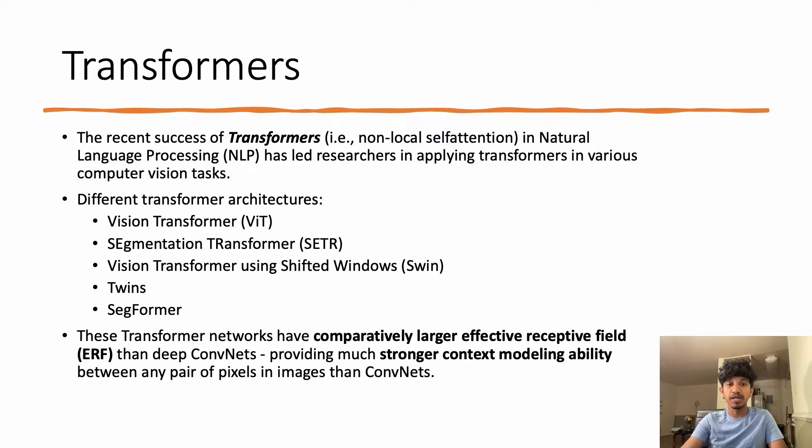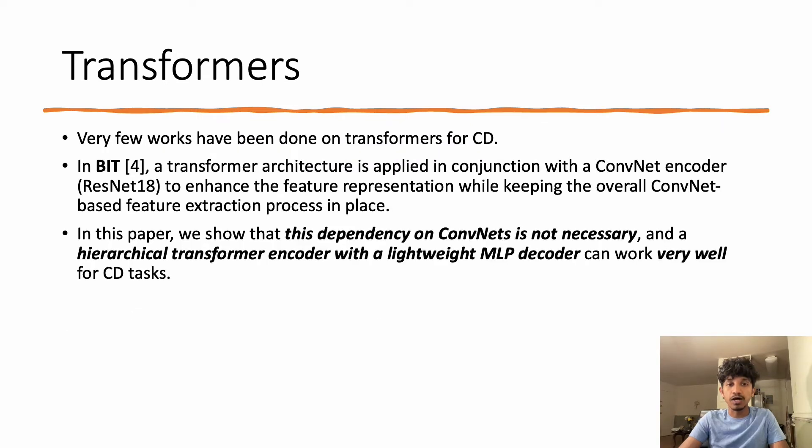These transformer networks have comparatively larger effective receptive fields than deep convolutional networks, providing much stronger context modeling ability between any pair of pixels in the image. Although transformer networks have larger receptive fields and stronger context-shaping ability, very few works have been done on transformers for change detection.